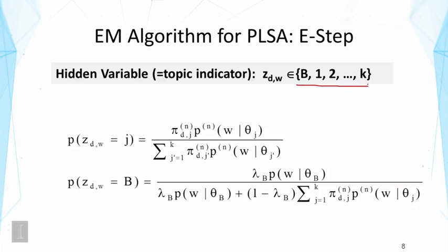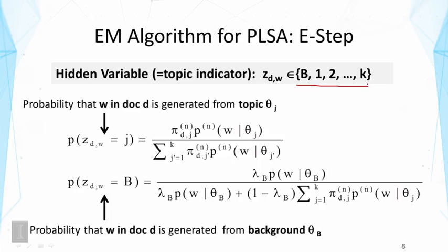Now the E-step, as you can recall, is to augment the data by predicting the values of this hidden variable. We're going to predict for a word whether the word has come from one of these k plus one distributions. This equation allows us to predict the probability that the word w in document d is generated from topic theta sub j. And the bottom one is to predict the probability that this word has been generated from the background.